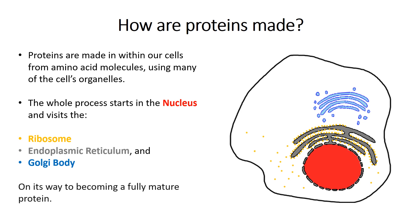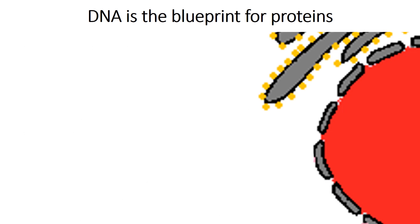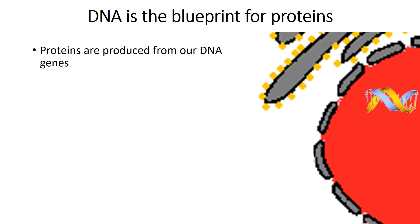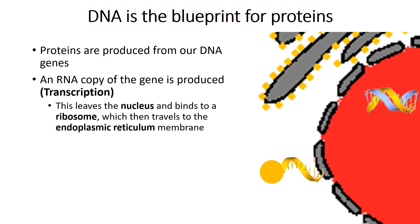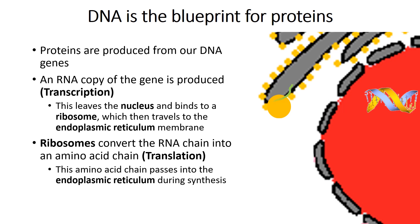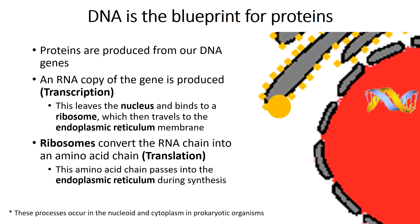Now let's take a closer look at the overall process of how these molecules are made. Proteins are produced or synthesized using the genetic code present in our DNA, which provides an instruction manual for how the proteins are manufactured from amino acids. First, a section of DNA containing a gene goes through transcription in the nucleus to produce a single-stranded RNA copy of the gene. This copy then leaves the nucleus and associates with a ribosome, which then moves to the membrane of the endoplasmic reticulum. Here, the RNA code is translated into a chain of amino acid molecules by the ribosome, which is released into the inner space of the endoplasmic reticulum. In prokaryotic organisms such as bacteria, these processes occur in the nucleoid and cytoplasm respectively.